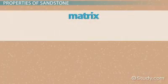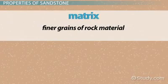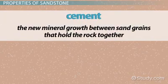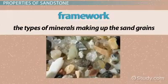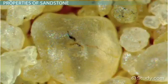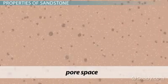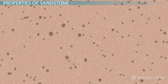The makeup of the matrix — the finer grains of rock material — and the cement, the new mineral growth between sand grains that holds the rock together, is also variable. The distance the sand grains traveled can also be inferred from the types of minerals making up the sand grains, or the framework. For instance, abundant quartz grains suggests that pieces of the source rock traveled great distances before becoming part of the new sandstone. The pore space in sandstone is also important information, particularly when considering how water moves through the rock.